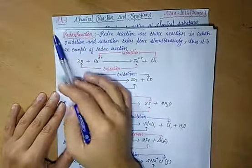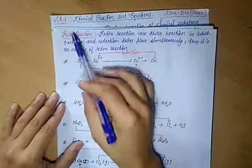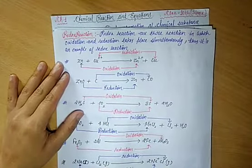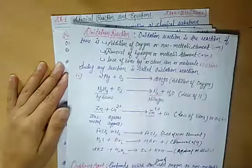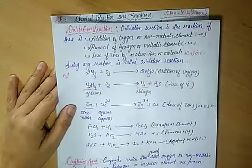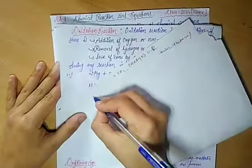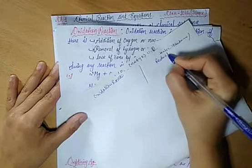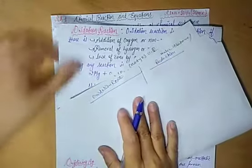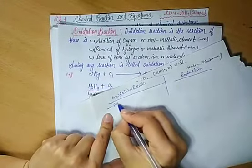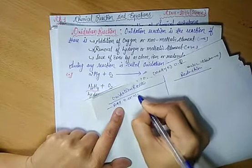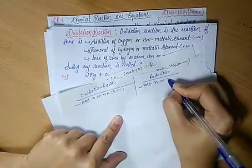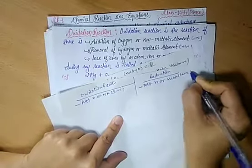Hello students, we are discussing Chapter 1 of Class 10 Science. The name of the chapter is Chemical Reactions and Equations. In the previous class, we discussed reduction reactions. Now let us review again: oxidation reaction and reduction reaction. You have two types of reactions. Oxidation reaction involves addition of oxygen or non-metallic or electronegative elements. Reduction involves addition of hydrogen and metallic or electropositive elements.